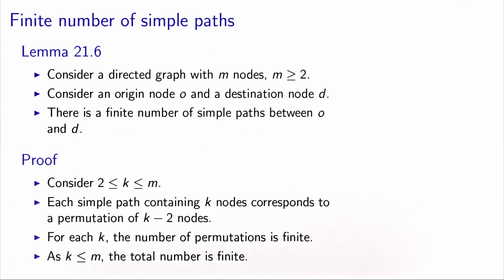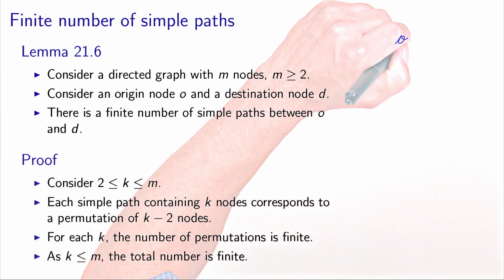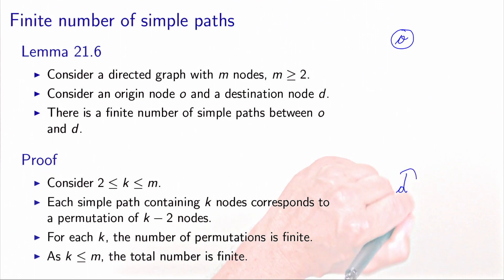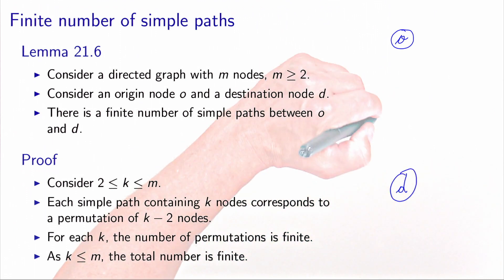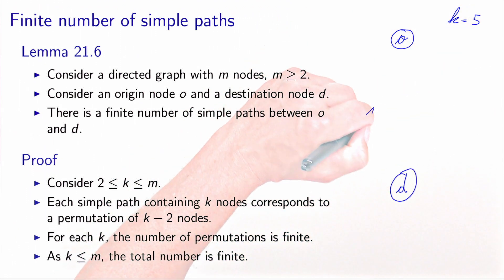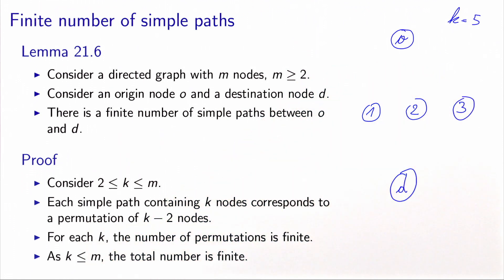To prove that, let's consider a number K of nodes, which is between 2 and M. For example, let's consider an origin O, a destination D, and take K equals 5, so that we have three intermediate nodes besides O and D.